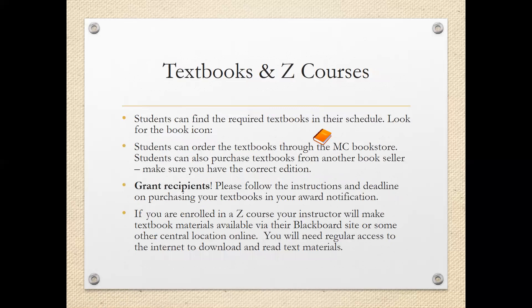Textbooks and Z courses: students can find required textbooks in their schedule — look for the book icon. Students can order textbooks through the MC bookstore, or purchase from another bookseller, but make sure you have the correct edition. Grant recipients should follow the instructions and deadline on purchasing textbooks in their award notification. If you are enrolled in a Z course, your instructor will make textbook materials available via their Blackboard site or another central location online, and you will need regular internet access to download and read text materials.